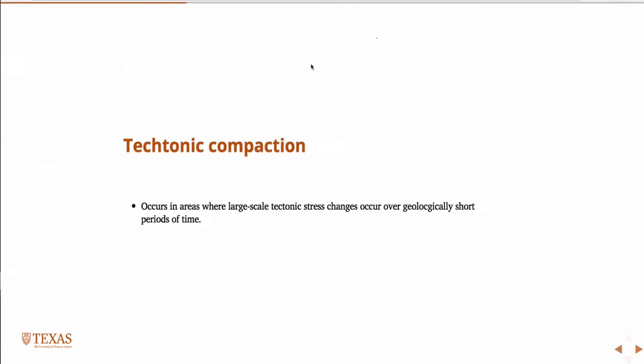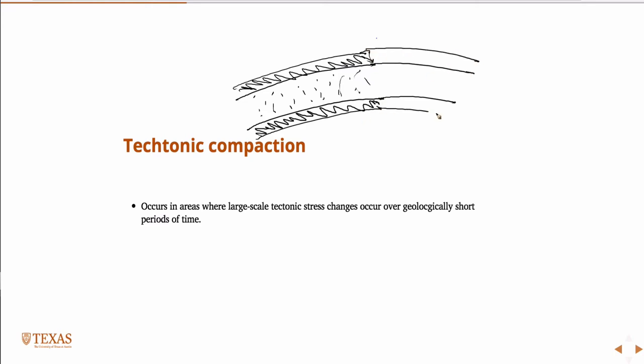So, tectonic compaction. Now imagine a scenario where you have a reservoir, there's some sealed layer, and let's draw it this way. So you have a reservoir, and then at some point in time faulting occurs, such that the reservoir, due to faulting now, appears like that.